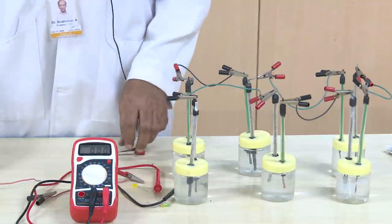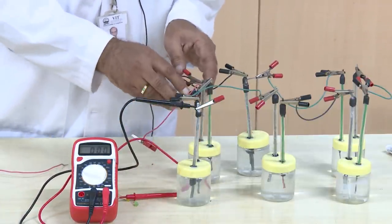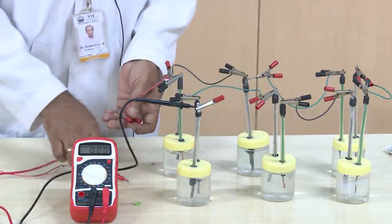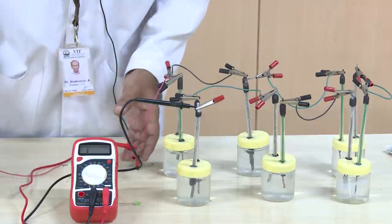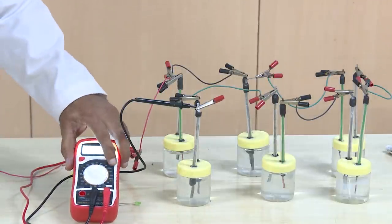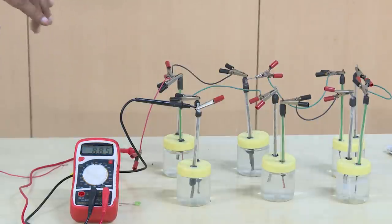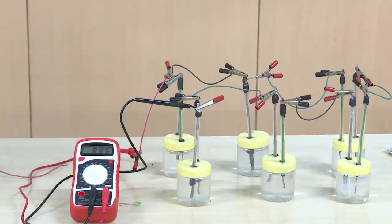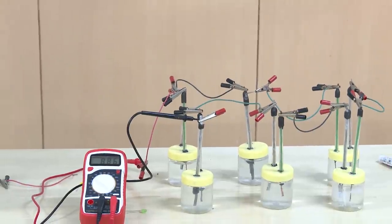Now we will measure the voltage of these 6 cells which are connected in series. We will measure the voltage of all these 6 cells together. Now you see what is the voltage you are getting? You are getting 8.84 volts, because all the cells are connected in series. If you want to get more voltage, you can have another 4 cells, another 5 cells in series. Depending on the number of cells, you will get 1.4 to 1.5 volts more for each cell that you are connecting in series.